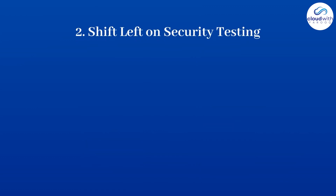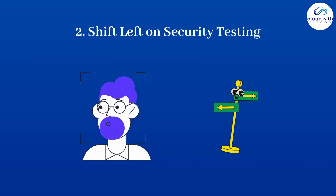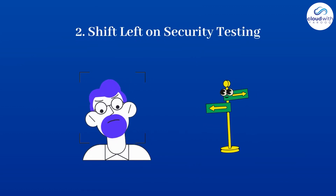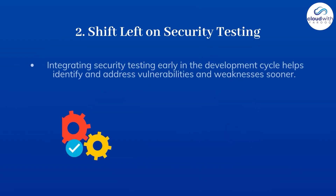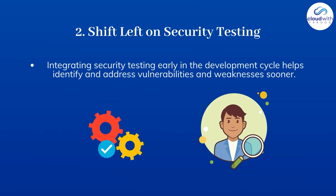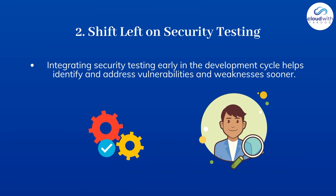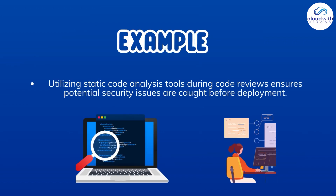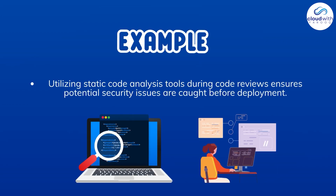Point 2: Shift left on security testing. Integrating security testing early in the development cycle helps identify and address vulnerabilities and weaknesses sooner. For instance, utilizing static code analysis tools during code reviews ensures potential security issues are caught before deployment.